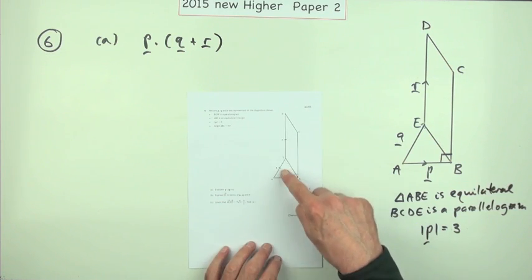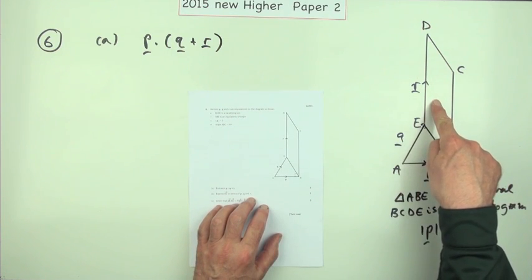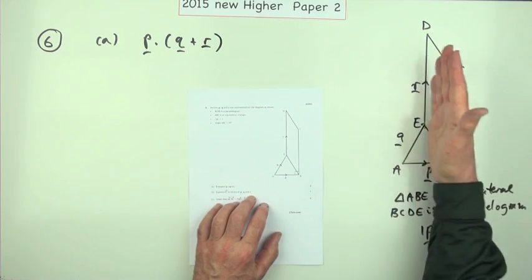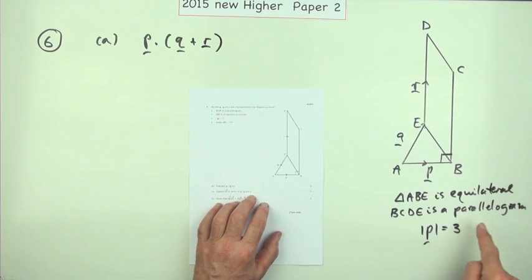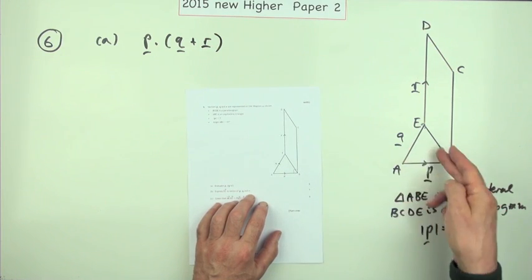It's made up of those very useful components for vectors: a parallelogram meaning opposite sides are parallel and the same length, so you've got the same vectors, and an equilateral triangle meaning all the sides are the same and you also know the angles, they're all 60 degrees.